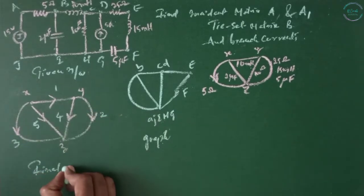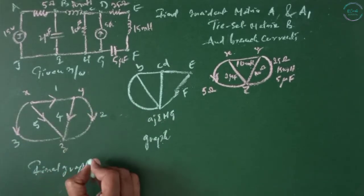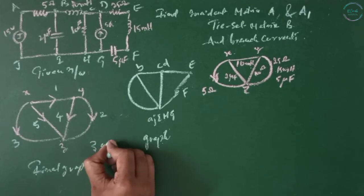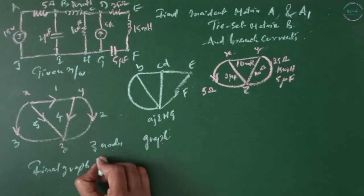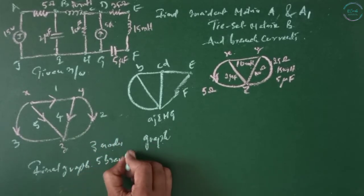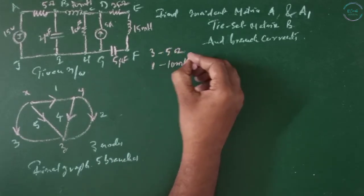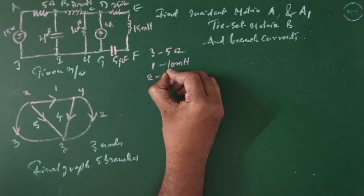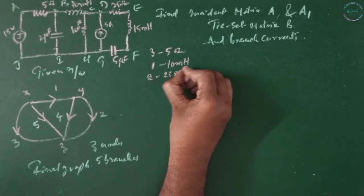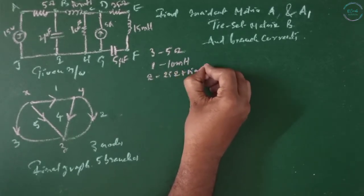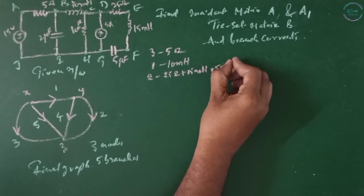A final graph with 3 nodes and 5 branches. Branch 3 is 25 ohms. Branch 1 is 10 millihenries. Branch 2 has 25 ohms plus 15 millihenries plus 5 microfarads.